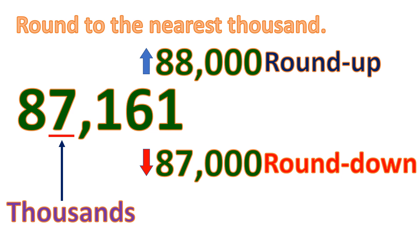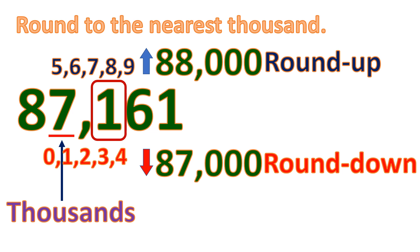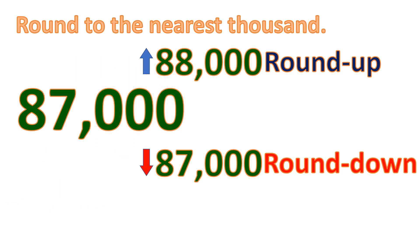To know if you round up or round down, we look at the number to the right. If that number is 5 or more, you round up. If it is less than 5, you round down. Since the digit to the right is 1, and 1 is less than 5, that means we round down to 87,000.